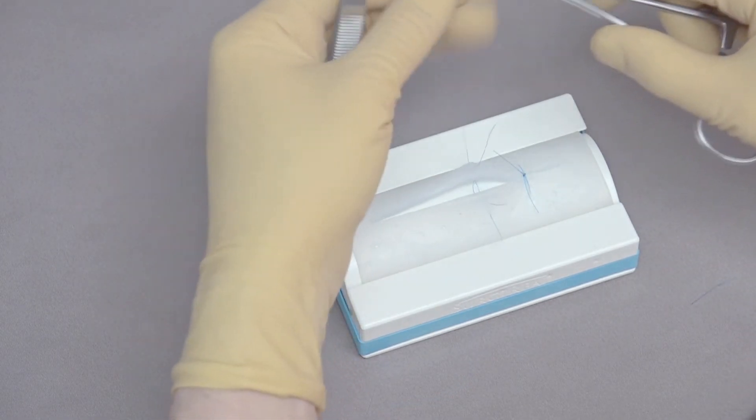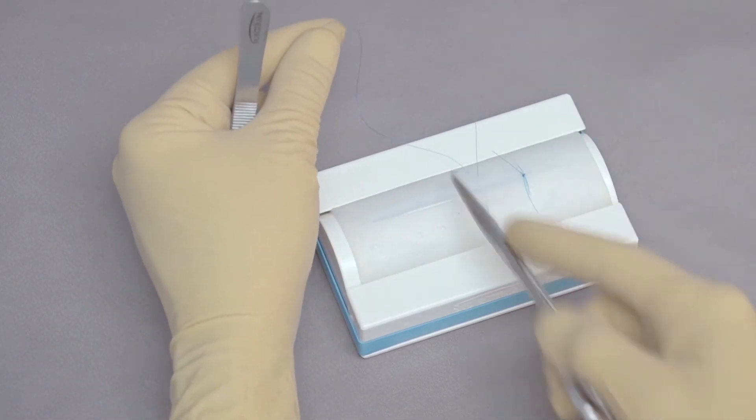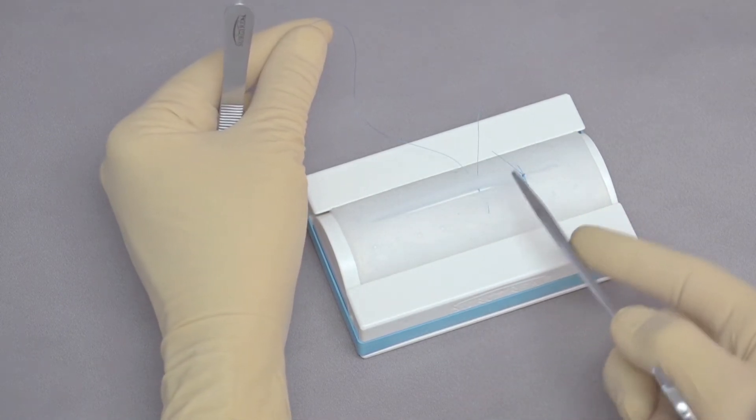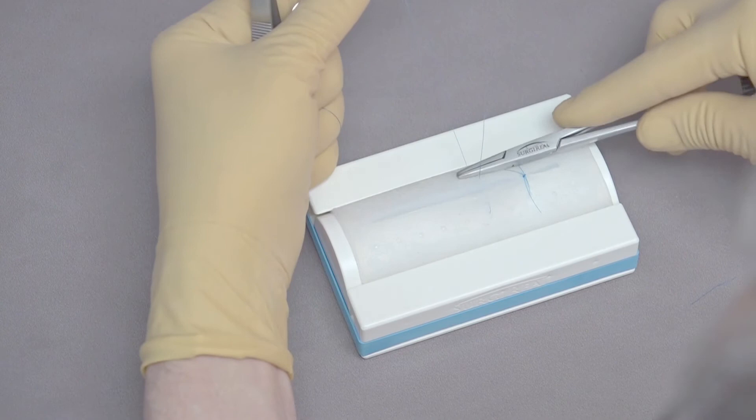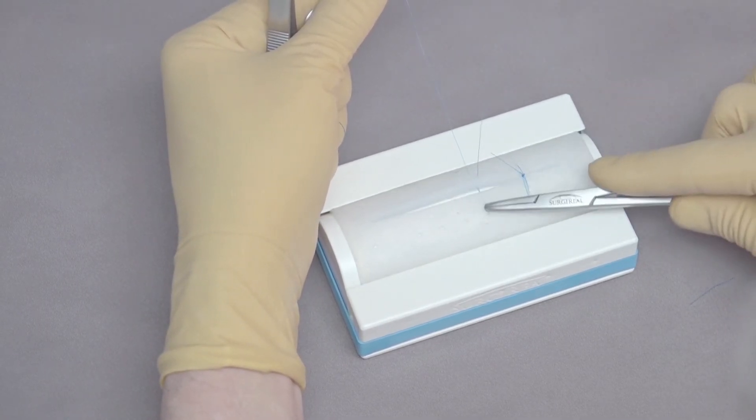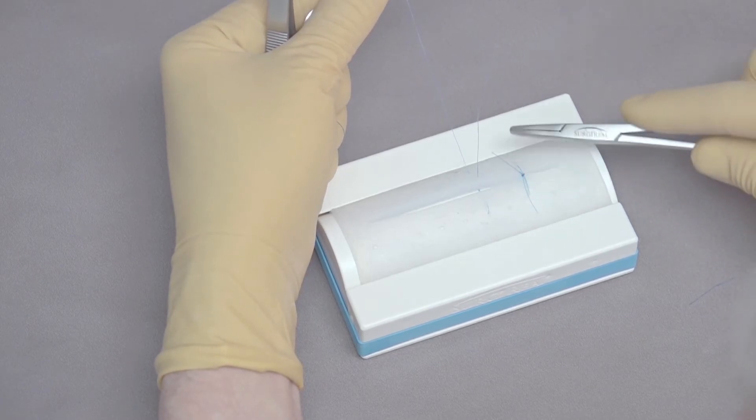You can appreciate that the vertical mattress, unlike the near far far near, is all in line with itself, straight across the incision, but now the knot is tied on this side. The difference is we've got a greater amount of tissue here that can distribute tension than the two bites on the near far far near.